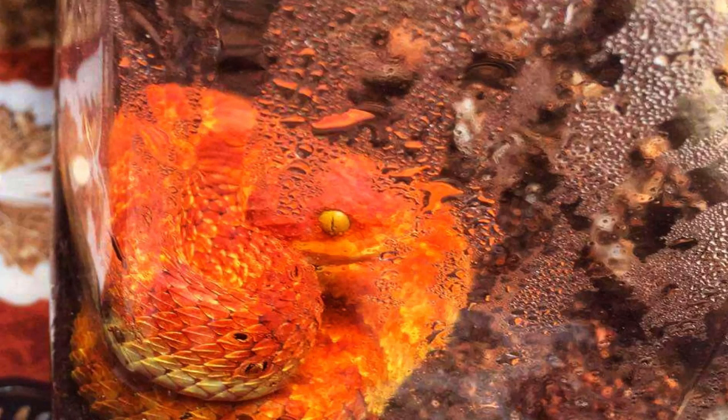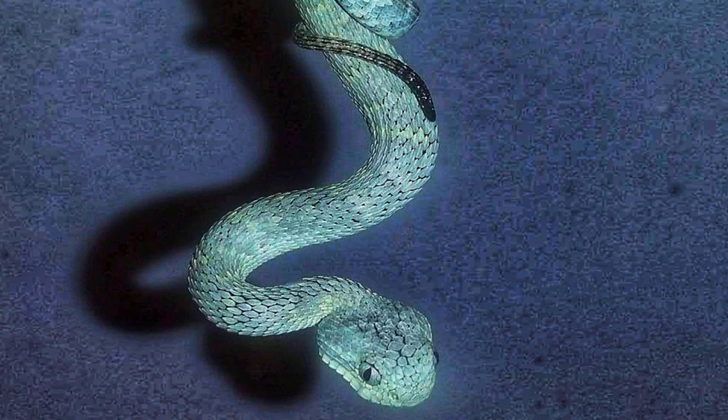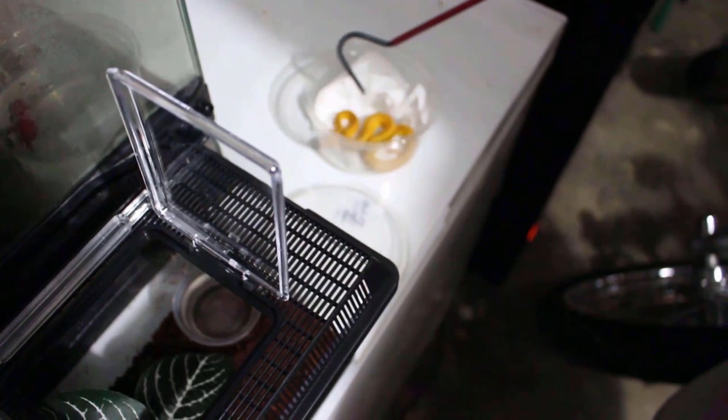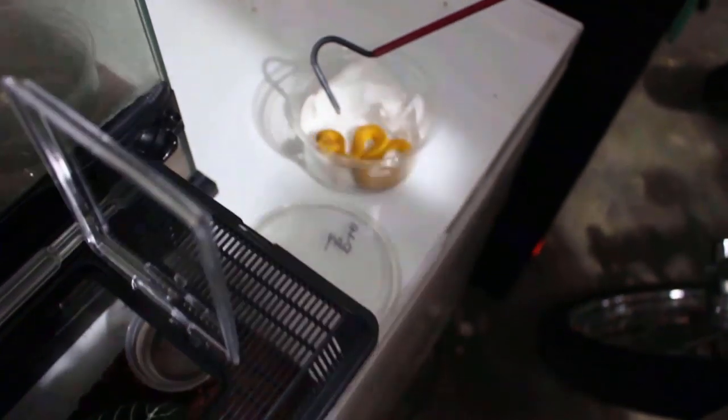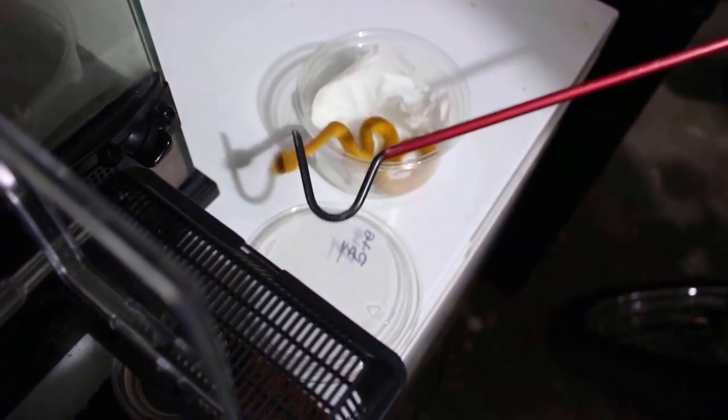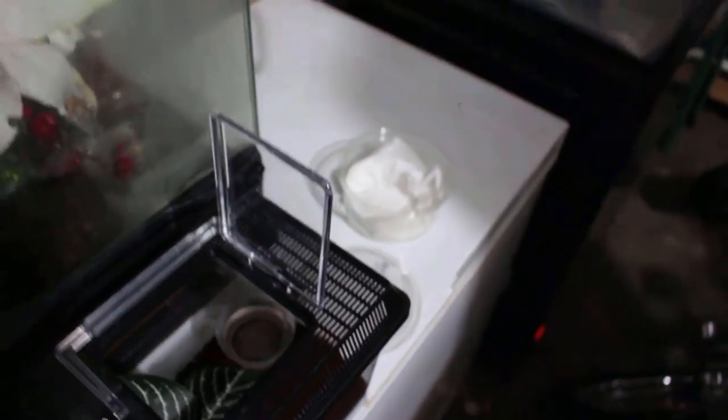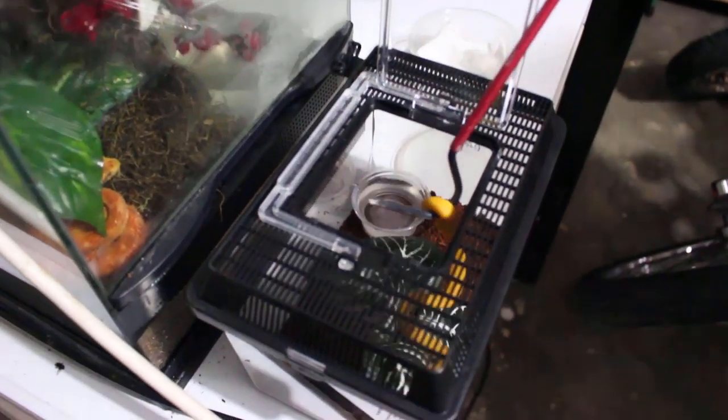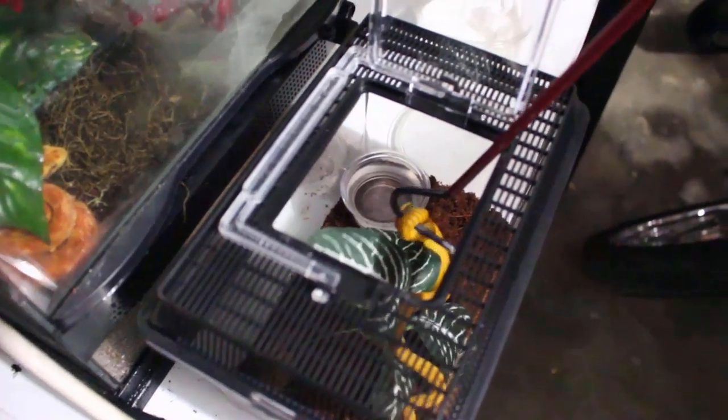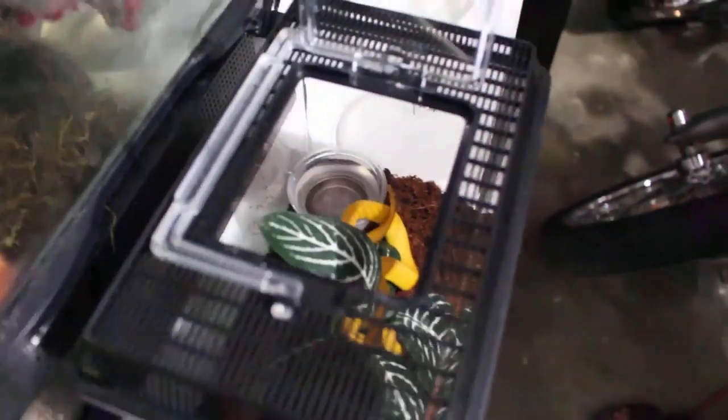The five vipers we're unboxing tonight are the Atheris squamiger, or Variable Bush Viper from Africa. These are relatively small vipers, getting around 18 to 24 inches, with some specimens getting larger. They're considered very small compared to many other African snakes, but these guys are extremely toxic, drop for drop. This size could kill an adult human being.